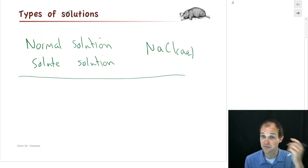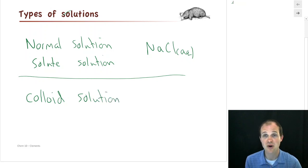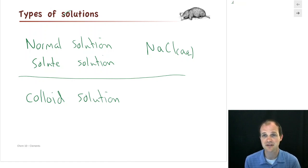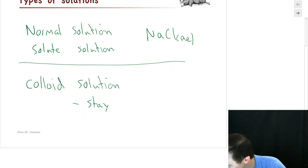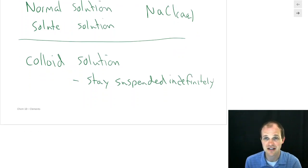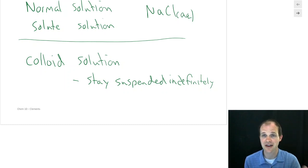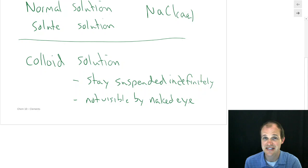We can also dissolve bigger things in water and get what's called a colloid solution. That might be protein molecules — very large molecules that sit in water and are not exactly dissolved, but certainly not separating out either. A property of colloid solutions is that the proteins stay suspended indefinitely. If you take a colloid solution of protein and come back a year later, the protein won't have settled to the bottom. There's enough energy in the water to keep it mixed in.